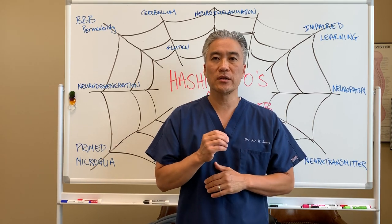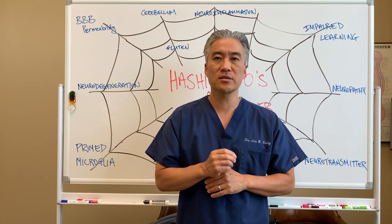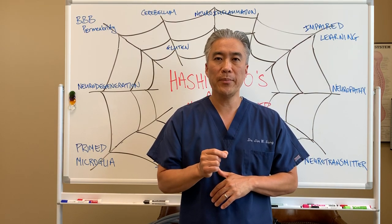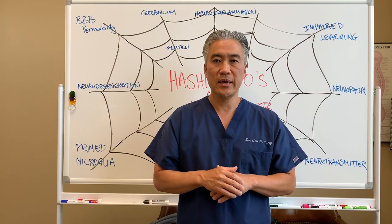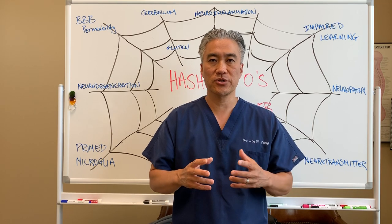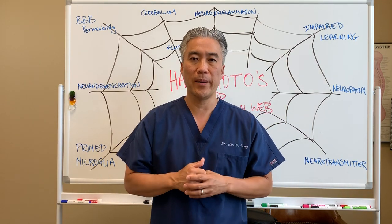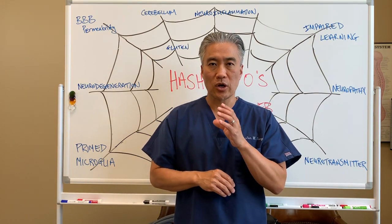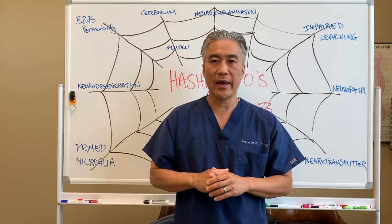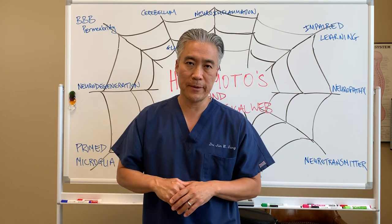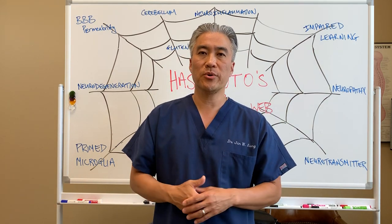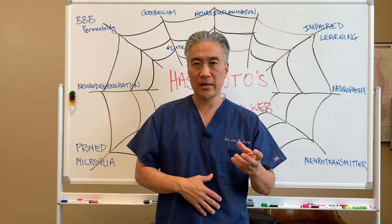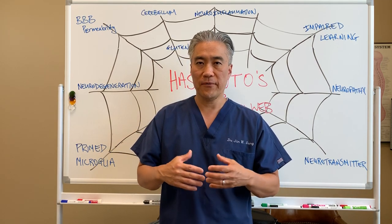Welcome back. This is Dr. Jin Sung, where clinical excellence meets excellent results. Last week we talked about the web of Hashimoto's thyroiditis and how different physiological functions can pull on this web. Today we're going to go into more specifics. We're going to talk about Hashimoto's thyroiditis and neurological conditions — how can Hashimoto's thyroiditis, which is an autoimmune condition that impacts the thyroid, affect the brain?